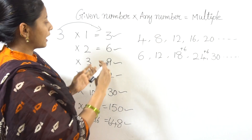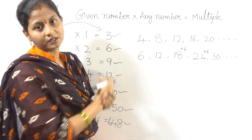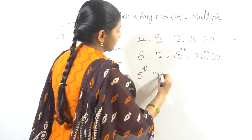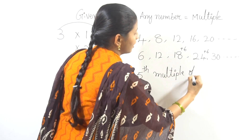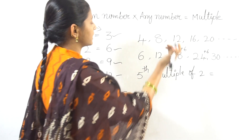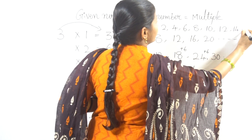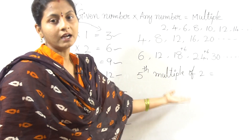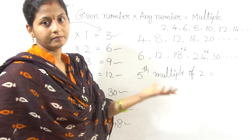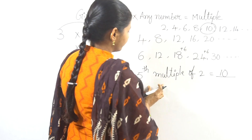So, the numbers which are obtained by multiplying a given number by any number are called multiples. For example, the 5th multiple of 2: the multiples of 2 are 2, 4, 6, 8, 10, 12, 14 ... The 5th multiple of 2 is 10.